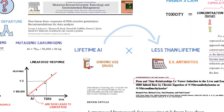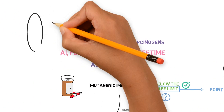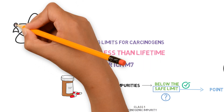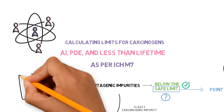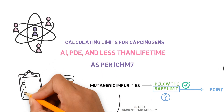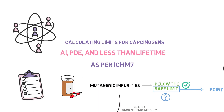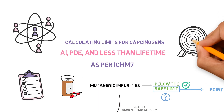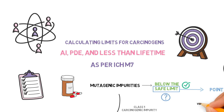This less-than-lifetime approach, including the safety factors, has been successfully applied in many different industries to protect from carcinogenic risk. In the scope of ICH M7, it not only allows for more achievable limits to be applied by the industry — who needs to control low-level impurities — but also gives us a much more realistic estimation of risk.